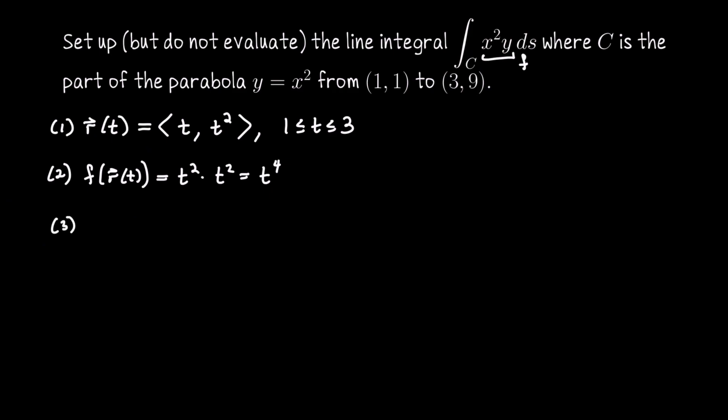Next I need the speed of the parametrization, which is the length of the velocity vector. In other words, it's the length of the vector ⟨1, 2t⟩. So that's √(1 + 4t²).